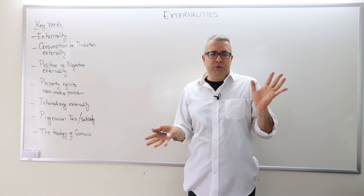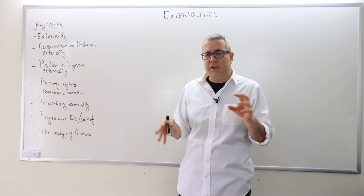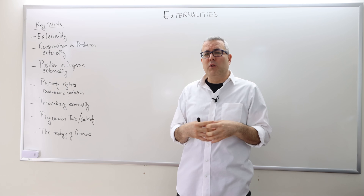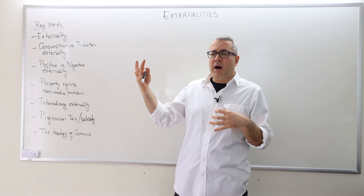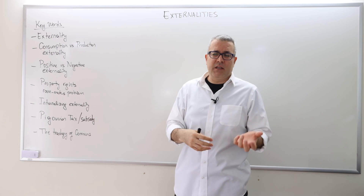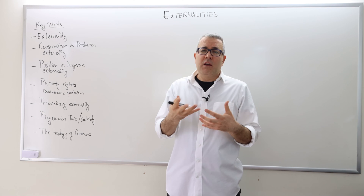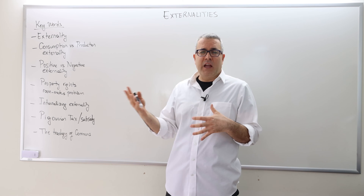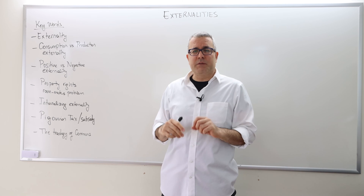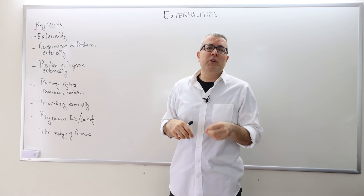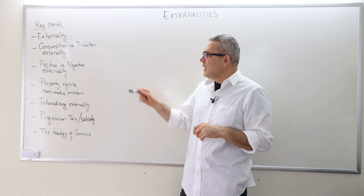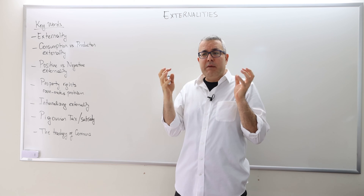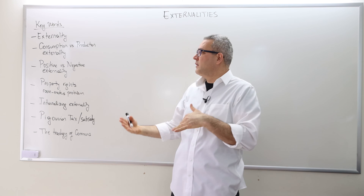We divide externality into two groups in this course: consumption externality and production externality. If a consumer's utility is impacted by other agents' choices, we call this consumption externality. If a producer's profit is influenced by the choices of other agents in the economy — whether that other agent is a consumer or producer doesn't matter — we call it production externality. So the characteristics of the impacted agent determine which type it is.